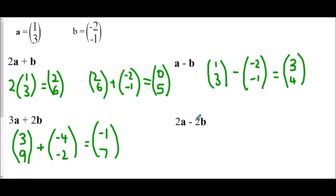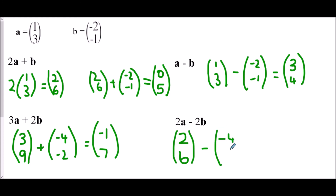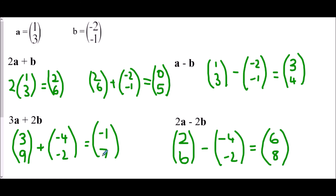Finally, 2a take away 2b: 2a is double vector a, giving two, six. 2b is double vector b, giving negative four, negative two. We are subtracting, so in the x direction: 2 take away negative 4 is the same as adding, giving 2 plus 4 equals 6. In the y direction: 6 take away negative 2 is the same as adding, giving 8. The resultant vector is six, eight.